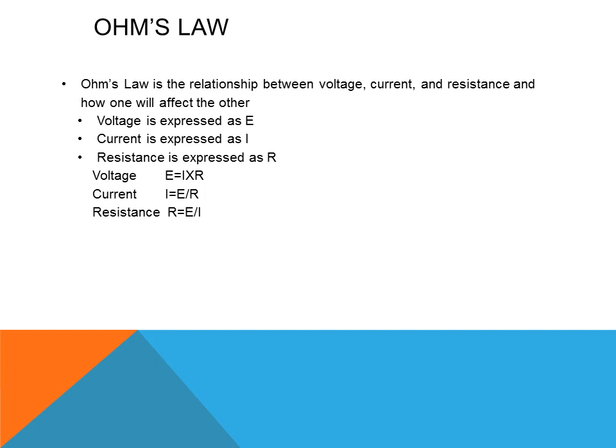Ohm's Law is a way to understand the relationship between voltage, current, and resistance, and how they affect each other. Voltage is expressed as the letter E, current as the capital letter I, and resistance as the capital letter R. The formulas are: voltage equals E equals I times R; current equals I equals E divided by R; and resistance equals R equals E divided by I.